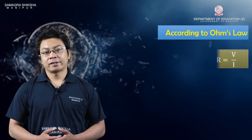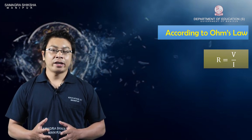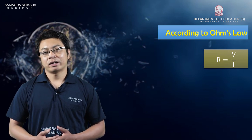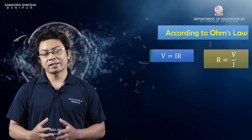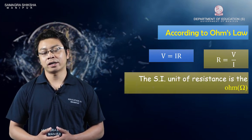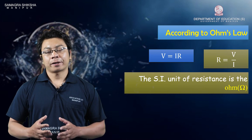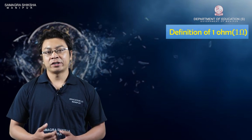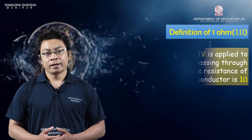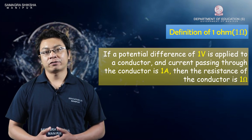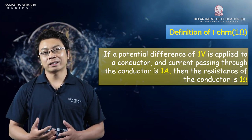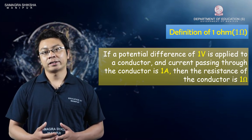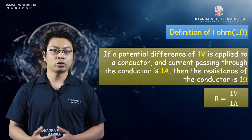The resistance is V divided by I, so R = V/I. The symbol for resistance is omega (Ω). The conductor's resistance is 1 ohm. The definition: if the conductor's potential difference is 1 volt applied and the current is 1 ampere, then resistance R = V/I = 1V / 1A = 1 volt per ampere.